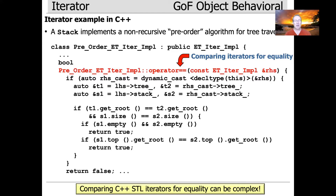C++ STL semantics are more complicated because you have to be able to compare the iterator at some point in the traversal with the end iterator. Certain properties have to hold — you actually have to be pointing to the same underlying data structure in order to do that comparison. You have to know whether the items are the same size, and so on. So this is an example of how to implement the equality operator, which would then be used by the inequality operator to check whether two iterators are not equal.